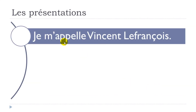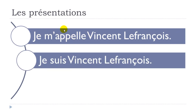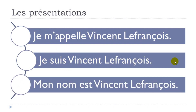And when you want to present yourself, remember we use the verb s'appeler: Je m'appelle Vincent Lefrançois — 'I call myself Vincent Lefrançois.' Another option is to use the verb 'to be': Je suis Vincent Lefrançois — 'I am Vincent Lefrançois.' And a third option: Mon nom est Vincent Lefrançois — 'My name is Vincent Lefrançois.'